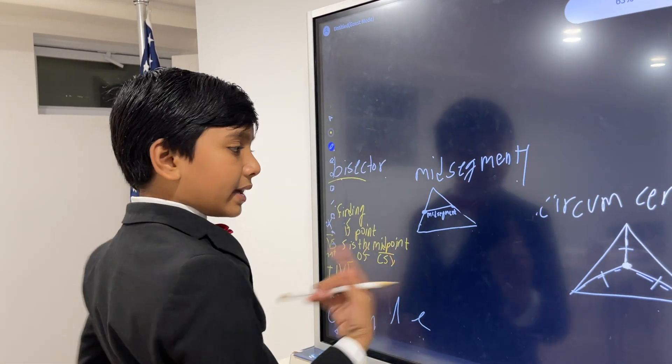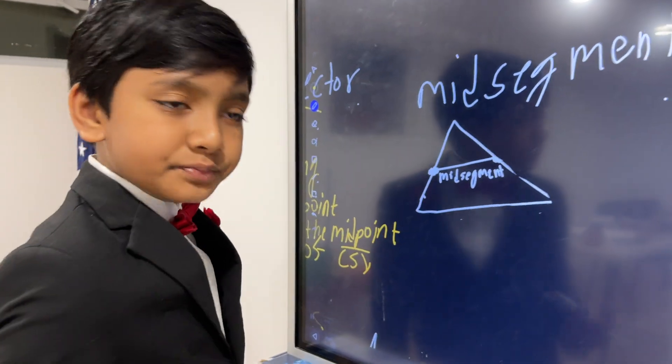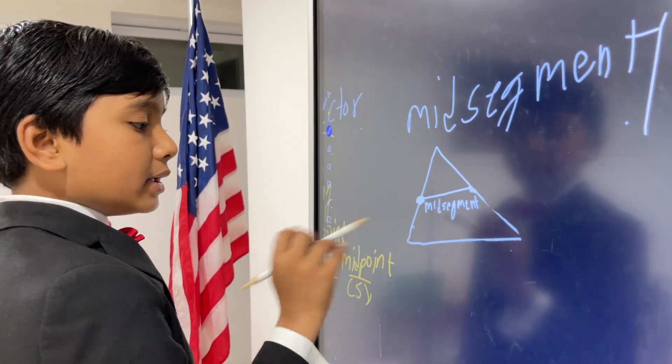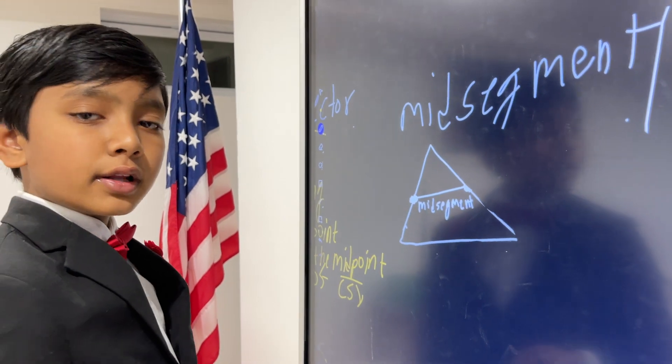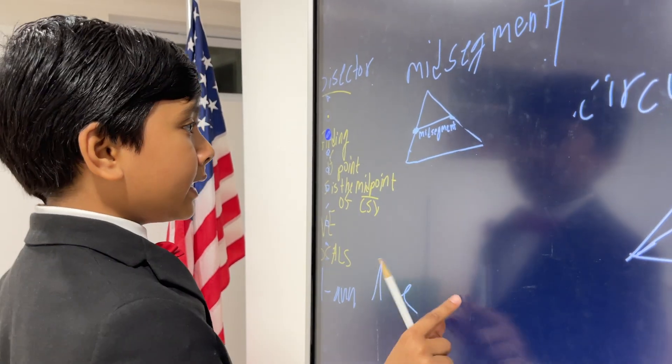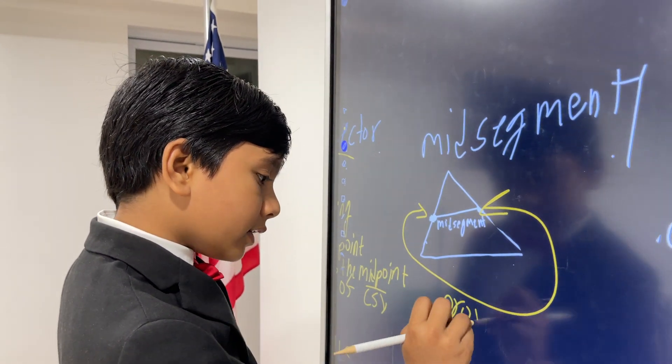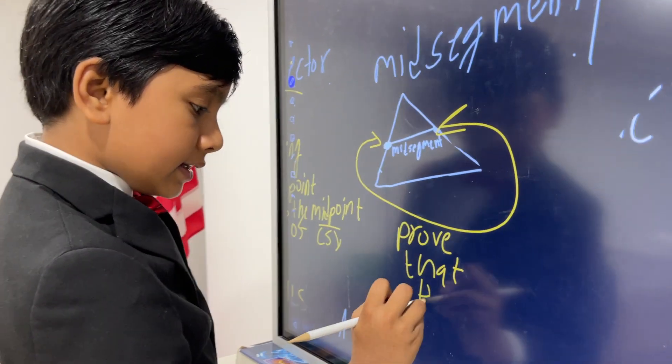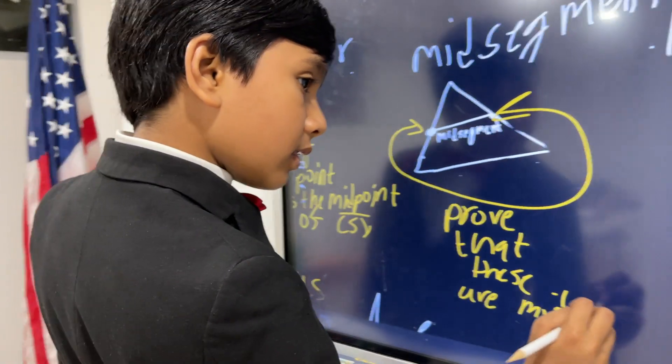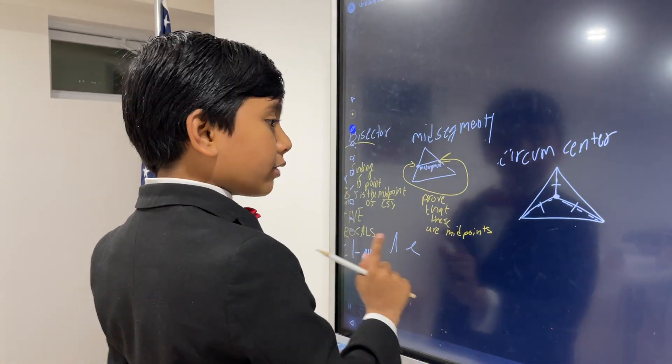Now what about the mid-segment? Well, the mid-segment is just a line formed by two of the midpoints of the sides of a triangle, and it will always be parallel to the side not included. So we can find if something is the mid-segment just by proving that these two are midpoints. And now finally, we just have to do the circumcenter and the rectangle.